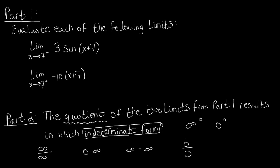Before getting into the indeterminate forms, part one of our question simply asks us to evaluate each of these two limits. Let's pass to the limit of each of them and see what we get. Looking at the first one, we have the limit of 3 times sine of (x + 7) as x approaches negative 7 from the right.